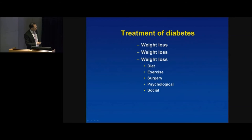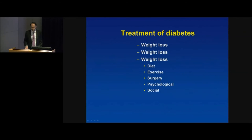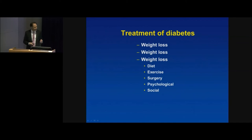Studies show that losing 5% of body weight reduces the risk of all the metabolic complications associated with diabetes. So for someone who weighs 100 kilos, losing 5 kilos can lead to much improved metabolic health. We can achieve this through diet, through exercise, and there are now surgical procedures available — bariatric surgery including sleeve gastrectomy and more complex operations — available particularly through the private health system but also sometimes publicly.